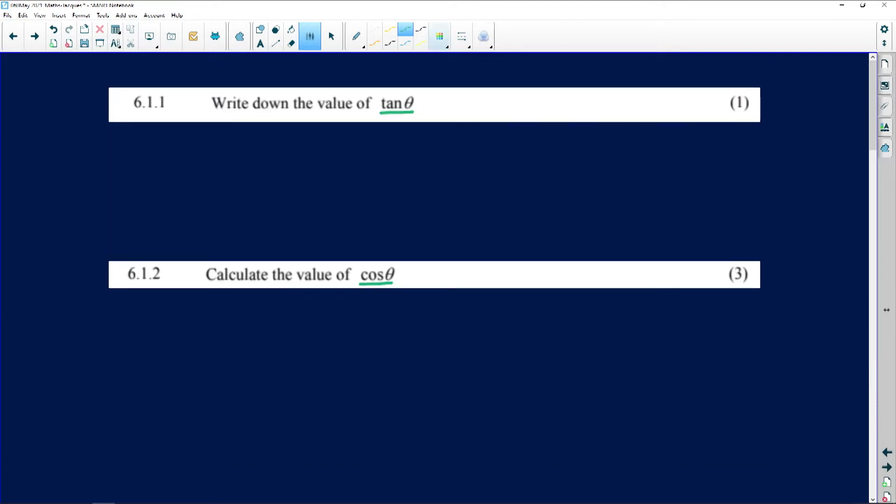Our tan of theta is equal to the opposite, and the opposite was 12, over the adjacent which was 5, and it was negative because in that second quadrant tan is indeed negative.